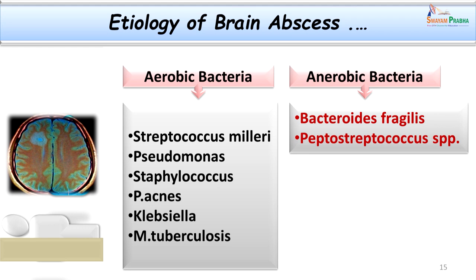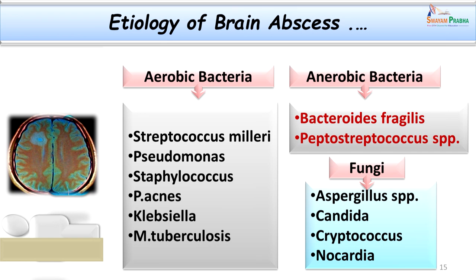Aerobic bacteria involved include Streptococcus milleri, Pseudomonas, Staphylococci, Propionibacterium acnes, Klebsiella species, and Mycobacterium tuberculosis in chronic brain abscess. The important ones are anaerobic bacteria, especially the Bacteroides fragilis group which we isolated in our index case. A combination of aerobic and anaerobic bacteria could be isolated in a single case — usually that is the picture we come across. There could be an association of Bacteroides fragilis with Peptostreptococcus or Peptococcus, or anaerobic bacteria associated with aerobic bacteria.